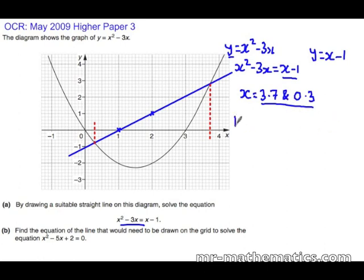Now for part b we need to use the same graph x squared minus 3x to solve x squared minus 5x plus 2 equals 0.